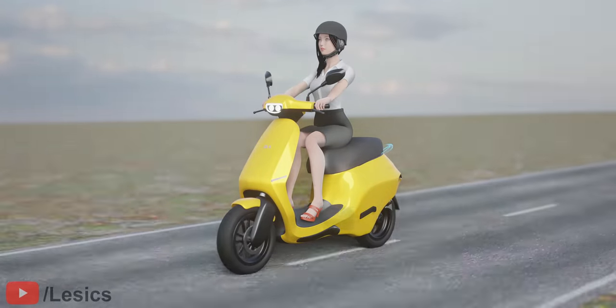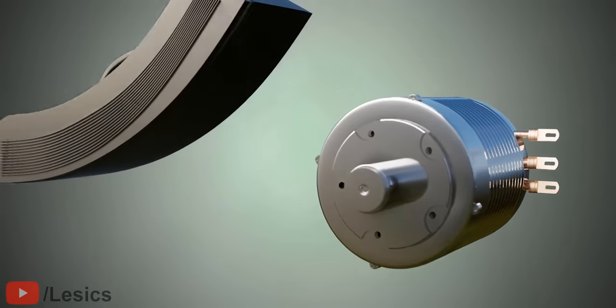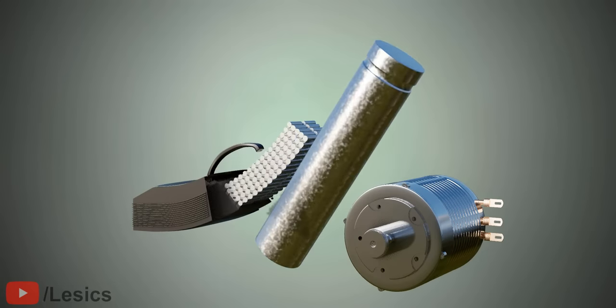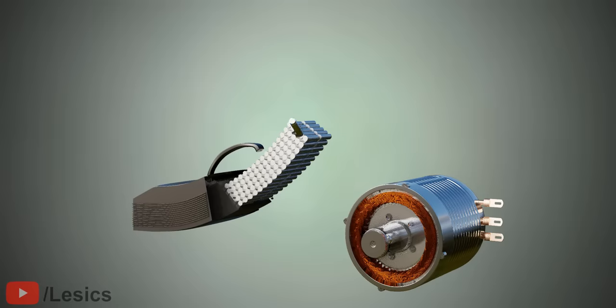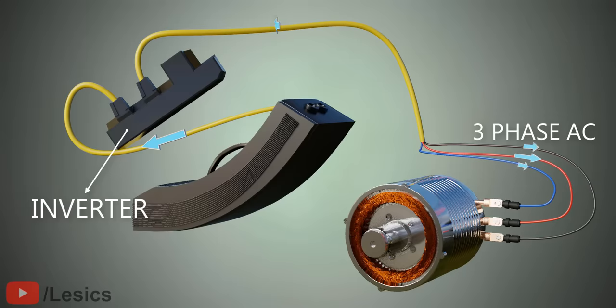The IPM motor requires an AC supply for its stator winding. To supply this power, Ola uses the banana battery pack, which is a collection of tiny cylindrical NCA cells. Obviously, we have to use a three-phase inverter in between to convert the battery's DC supply into an AC supply.